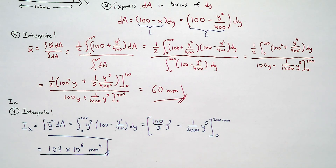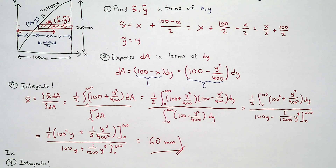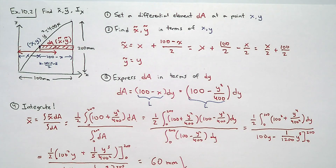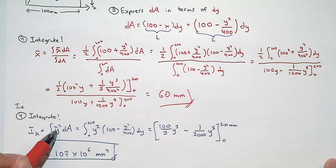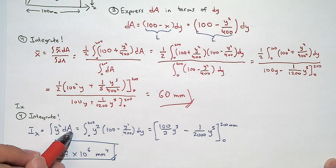Any questions? When we find the moment of inertia, the first three steps are the same as for centroid — we don't need to repeat them. The only thing that changes is the final integration step. For the units: y is millimeters, y² is millimeters squared, area is millimeters squared — so y²·dA gives millimeters to the fourth power. That's how we get mm⁴ for the moment of inertia.